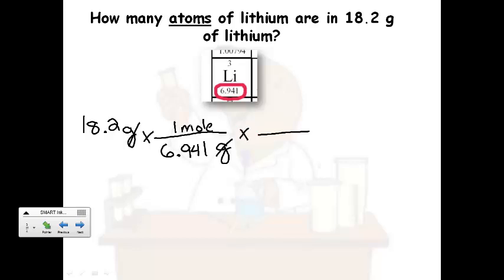So if you've got one mole on top, one mole's got to go on the bottom. And you're looking for particles or atoms, so you'd have to put 6.02 times 10 to the 23rd on top. So your moles canceled out. And now all you've got to do is plug it in.